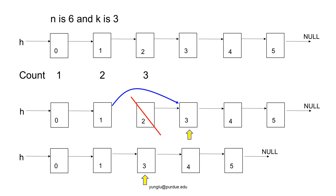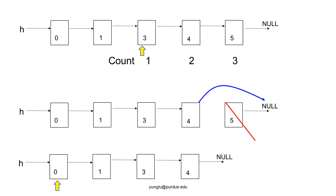The up arrow marks where counting should continue. From that node, we count 1, 2, and 3. The last node is removed.